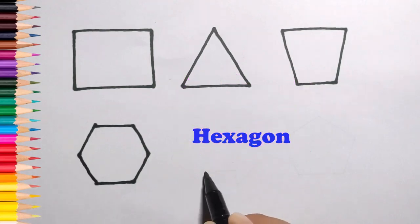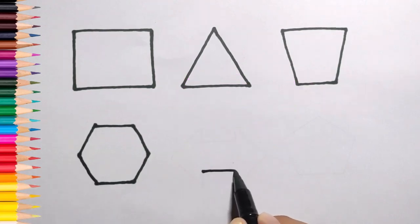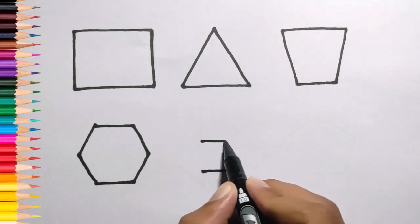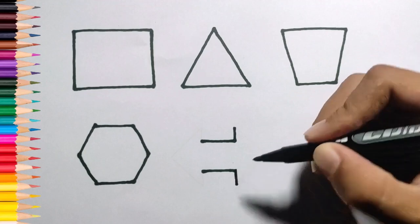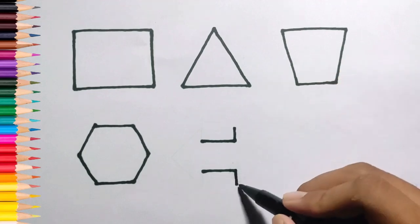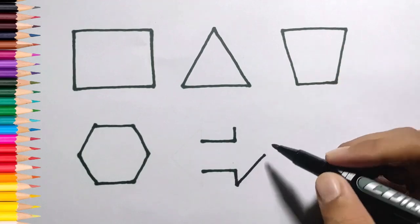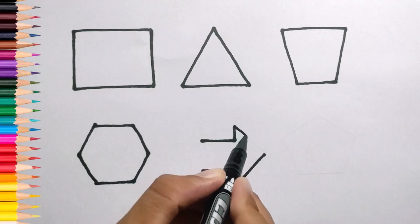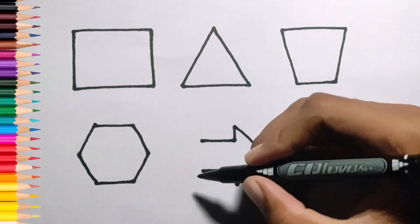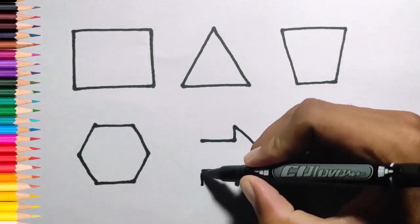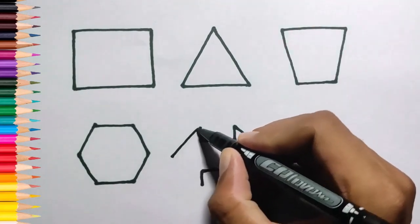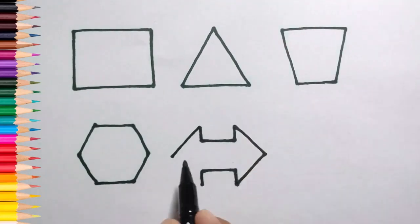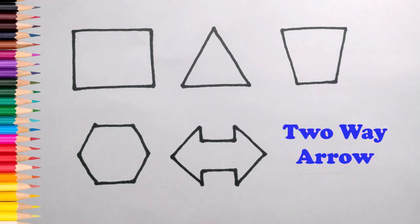Hexagon. Old MacDonald had a farm, E-I-E-I-O. And on his farm he had a dog, E-I-E-I-O. With a here and a there, here, there, everywhere. Old MacDonald had a farm, E-I-E-I-O. Two-way arrow.